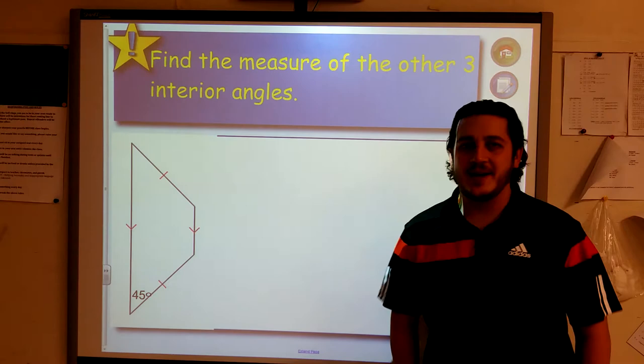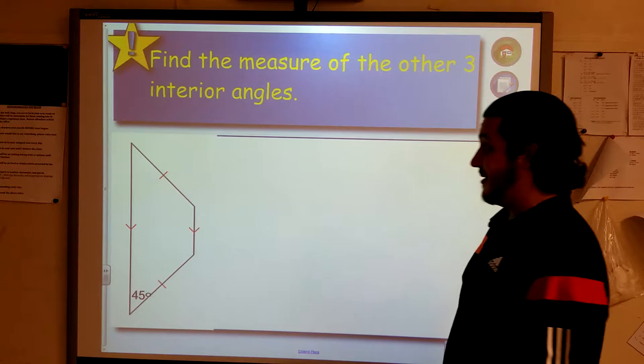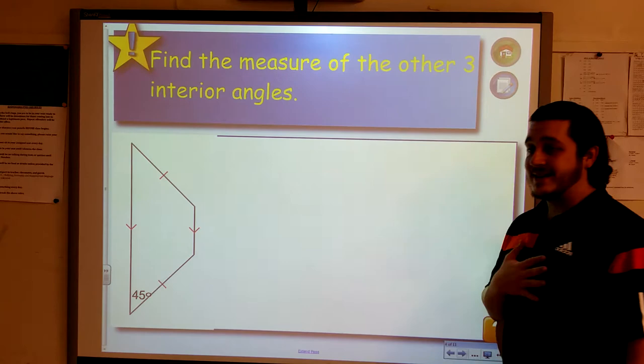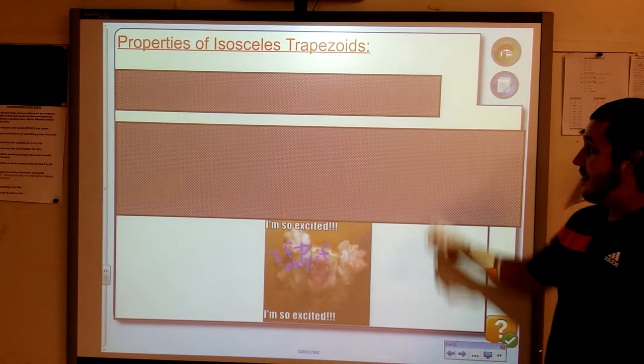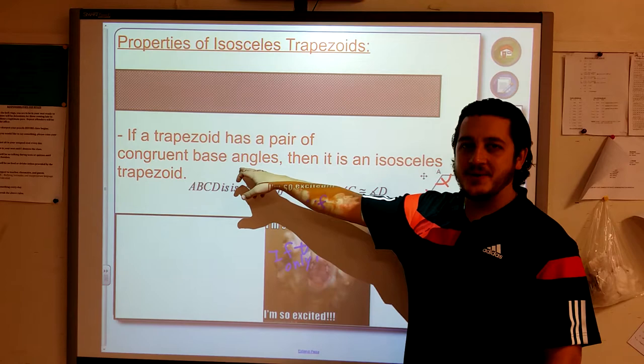We want to find the measure of the other three interior angles in this isosceles trapezoid. I'm giving away, I should have been asking, like, what kind of trapezoid is this? Or what type of shape is this? You would have said, oh, it's a trapezoid. And, oh, look, it's isosceles. You've got two congruent legs. I just gave it away to you. So, what do we talk about when the isosceles trapezoid? Base angles are congruent.